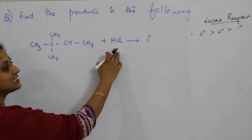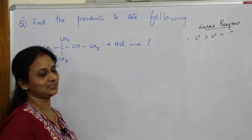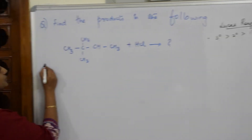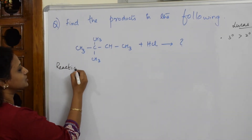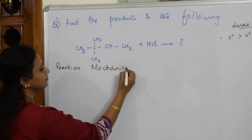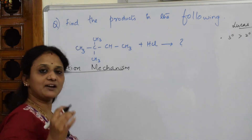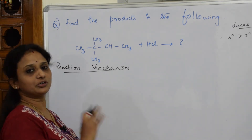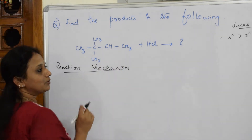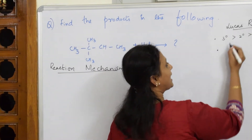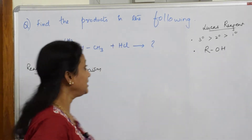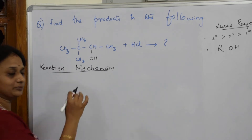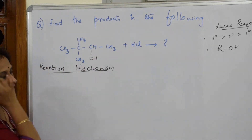In this particular question, a compound is given with HCl — anhydrous ZnCl₂ is there in the reaction. How should I start the reaction mechanism? Careful — whichever compound is given to you, first write as a subheading 'Reaction Mechanism' and start mentioning steps one after the other until the nucleophile is completely eliminated and a new nucleophile is introduced. Lucas reagent acts on alcohols, which is what we studied.